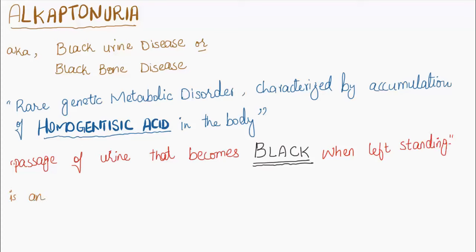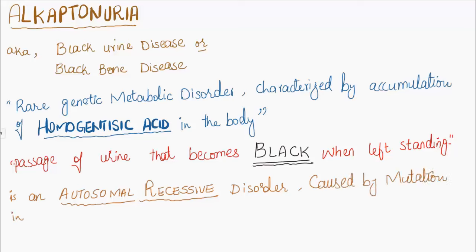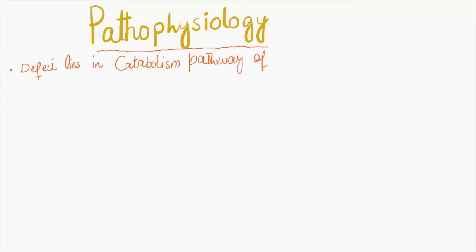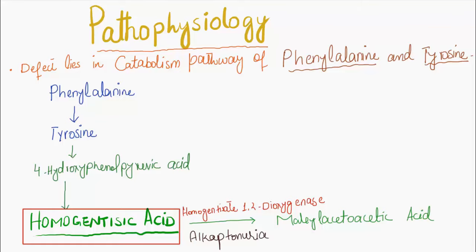It is an autosomal recessive disorder caused by mutation in the HGD gene located on chromosome 3. Its prevalence is one in 250,000 live births. The pathophysiology defect lies in the metabolism pathway of phenylalanine and tyrosine, as seen in this figure.